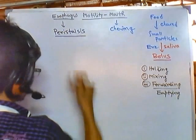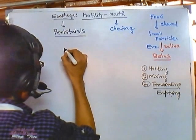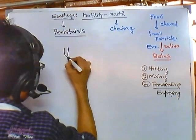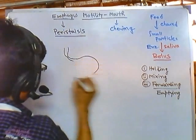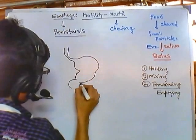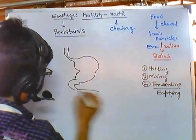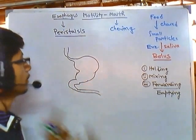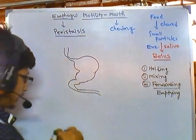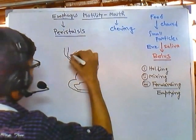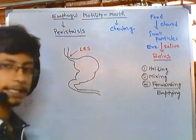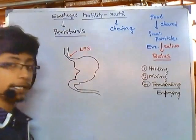Now if I draw the major parts, the stomach will look something like this. There is the lower esophageal sphincter, or LES, through which the bolus is migrating into the stomach.